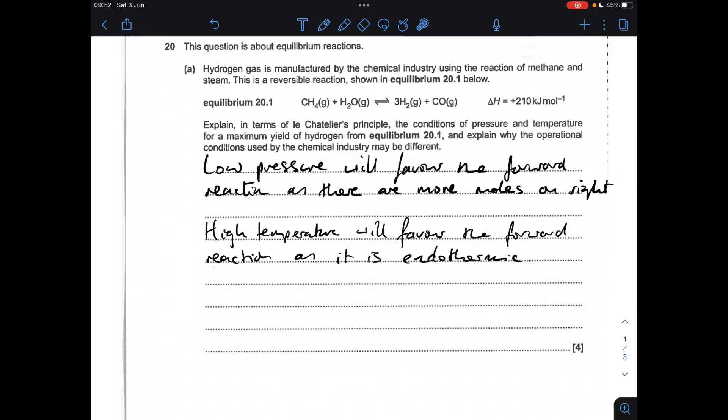Moving on to the operational conditions used by the chemical industry - they will be different for a couple of reasons. The low pressure means the rate would be low as well, which is not what industry wants. The problem with a high temperature is you've got increased energy costs.